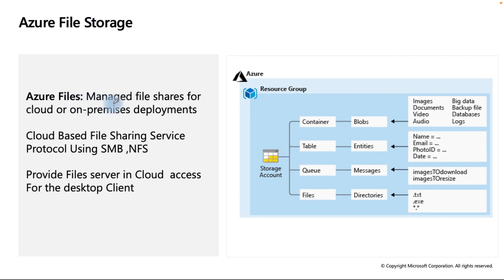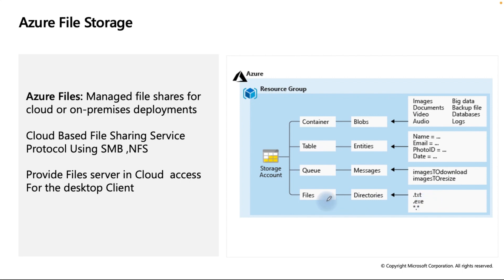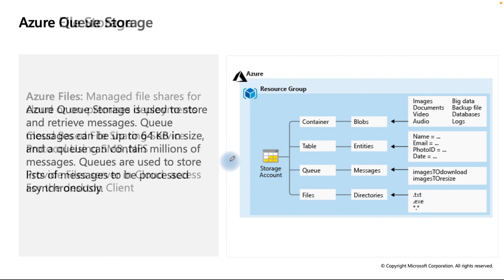Azure File Storage is a managed file share service for cloud or on-premises deployment. It supports the SMB and NFS protocols and provides a file server in the cloud, accessible from desktop clients. You can see examples like .txt and .exe files stored in a file share.